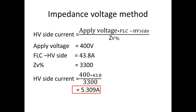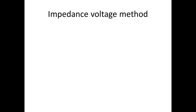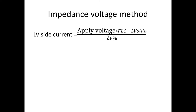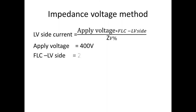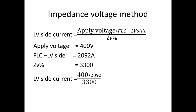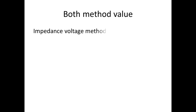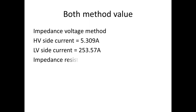Now for the LV side current using the same formula: the full load current of the LV side is 2052 A, giving 253.57 A. So we have two methods, and both give the same values. The results from both methods are consistent.